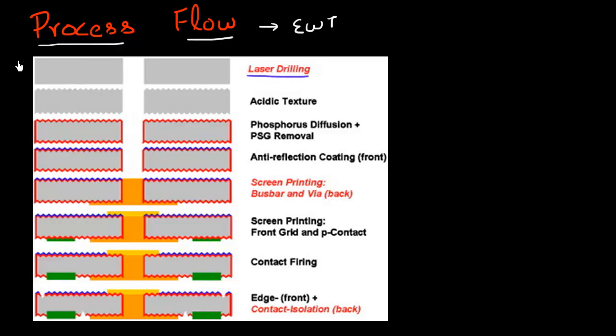You have this cell which is anywhere between 100 to 200 microns in thickness. To realize this wrap-through design, you need to puncture and drill a lot of these holes across this wafer. That is accomplished using laser drilling, and this has to be a very high throughput laser that can deliver more than thousands of these vias per second.